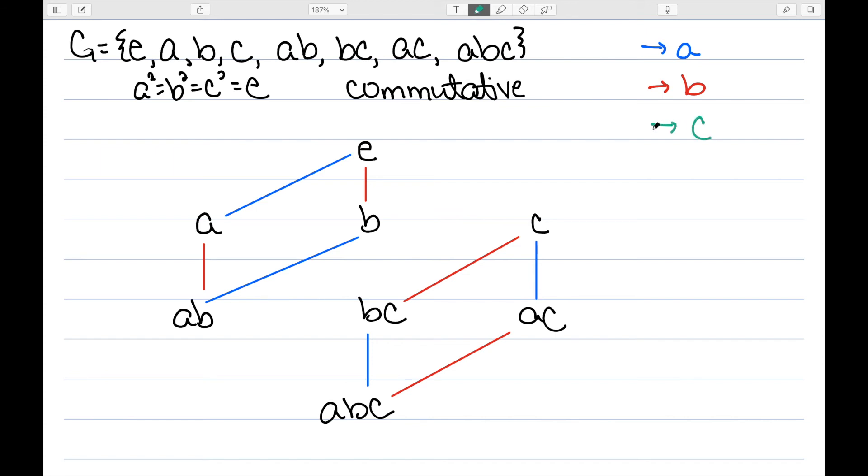Finally, I'll use this green for C. E times C is C. And C times C is E. A times C is AC. And AC times C is A. B times C is BC. And BC times C is B. AB times C is ABC. And ABC times C is AB. And now everything has a green line. So I am done with my Cayley diagram.